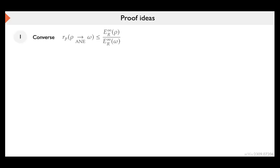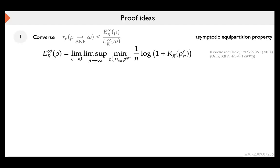I'd like to go through the main proof ideas. The converse bound — the upper bound on the rate — is already non-trivial because the usual approach using asymptotic continuity of the relative entropy of entanglement doesn't work for probabilistic rates. What we have to use instead is the asymptotic equipartition property, which connects the generalized robustness with the entropy, and then we can use properties of the robustness to bound these probabilistic rates. Interestingly, this equipartition property is itself one of the results from Brandão and Plenio's original paper.